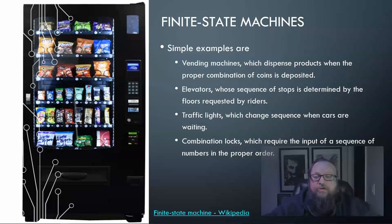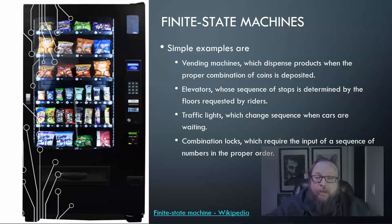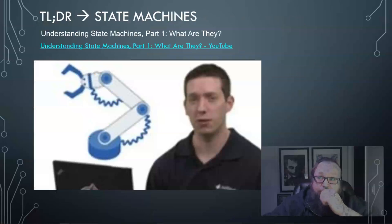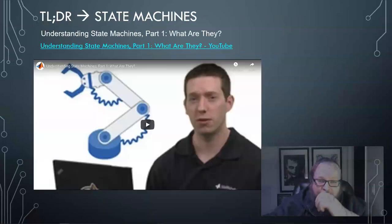Elevators, whose sequence of stops is determined by floors requested by the riders — definitely a state of going up or down and which floor to go to next. Traffic lights going through each step. And combination locks that require input in a specific sequence of numbers in the proper order to open. Before going on, I want to include a few videos so you can hear from someone else and get a few more ideas.